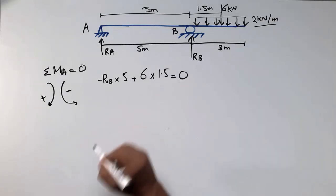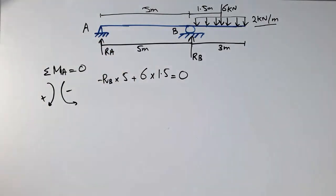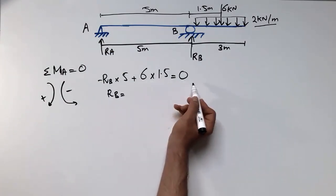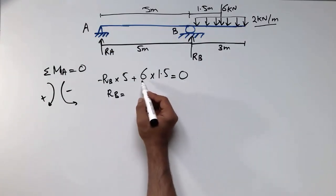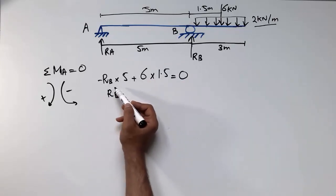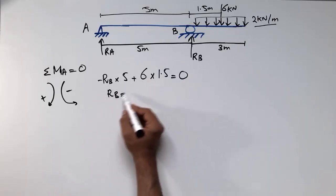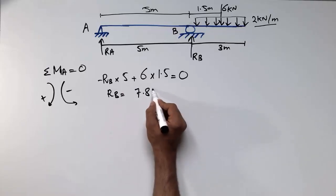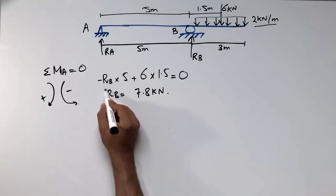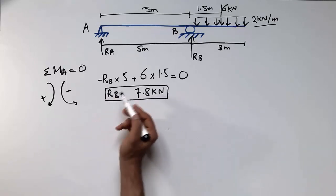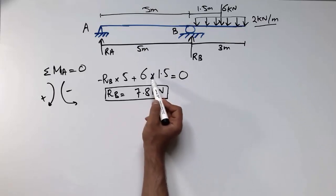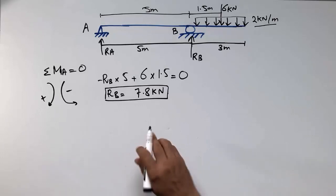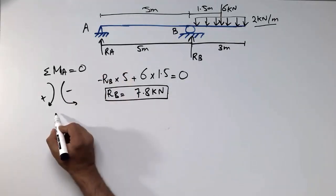Setting the summation of moments at A equal to zero and solving: moving terms to the right side, we divide by 5 to isolate RB. RB comes out to be 7.8 kN. This is straightforward — bringing the term to the right side and dividing by 5 gives RB = 7.8 kN.